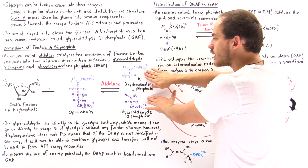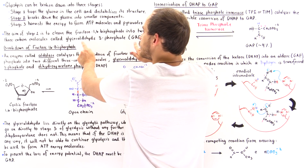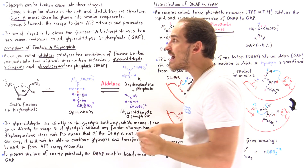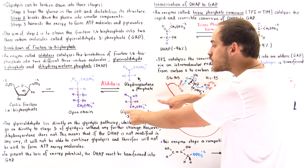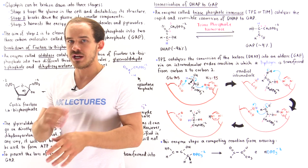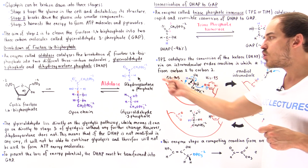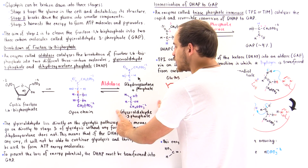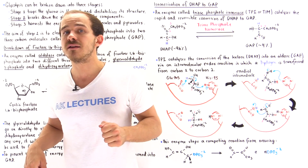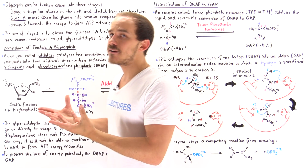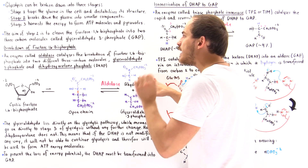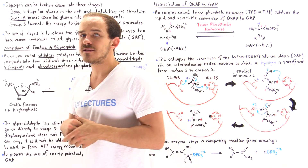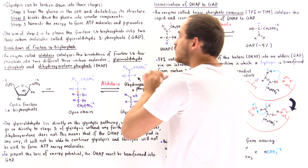Now let's look at the two products. One product is the glyceraldehyde 3-phosphate, which lies directly on the pathway of glycolysis. Once we form the GAP molecule, it can go directly into stage three without being modified in any way. But the other product, dihydroxyacetone phosphate, does not lie directly on the glycolytic pathway. If DHAP is left unmodified, it cannot move on to stage three, and we will essentially lose the potential to form ATP molecules in stage three.